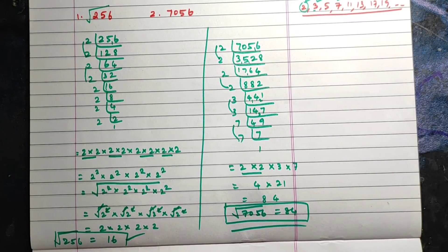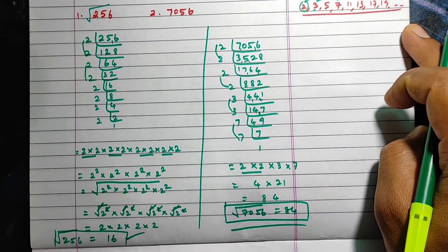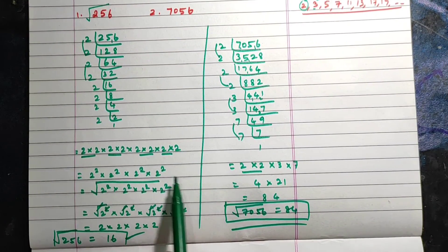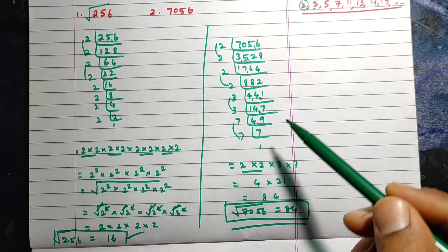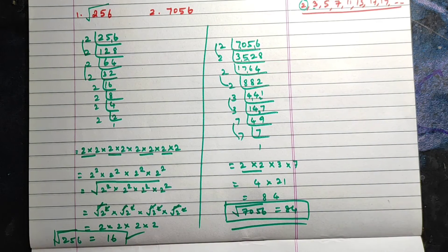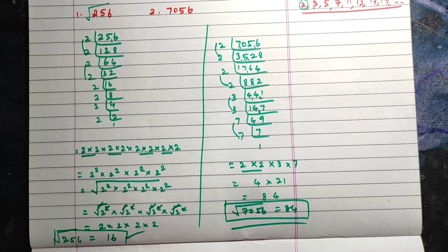This method is called the prime factorization method because we are using prime numbers — that is why it is called the prime factor method. Instead of using all these steps, you can directly take one number from each pair and multiply to get the square root. Hope you understand this prime factorization method. Thank you so much for watching. In the next video we will discuss finding the square root by the long division method.